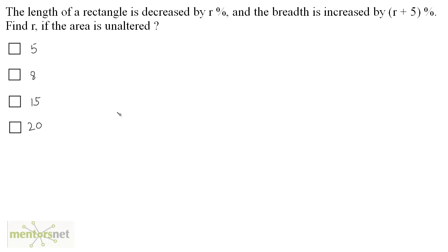The length of a rectangle is decreased by r percent and the breadth is increased by r plus 5 percent. Find the value of r if the area is unaltered. Let the length and breadth be L and B respectively, so area equals length times breadth. This area should remain unaltered after the changes.